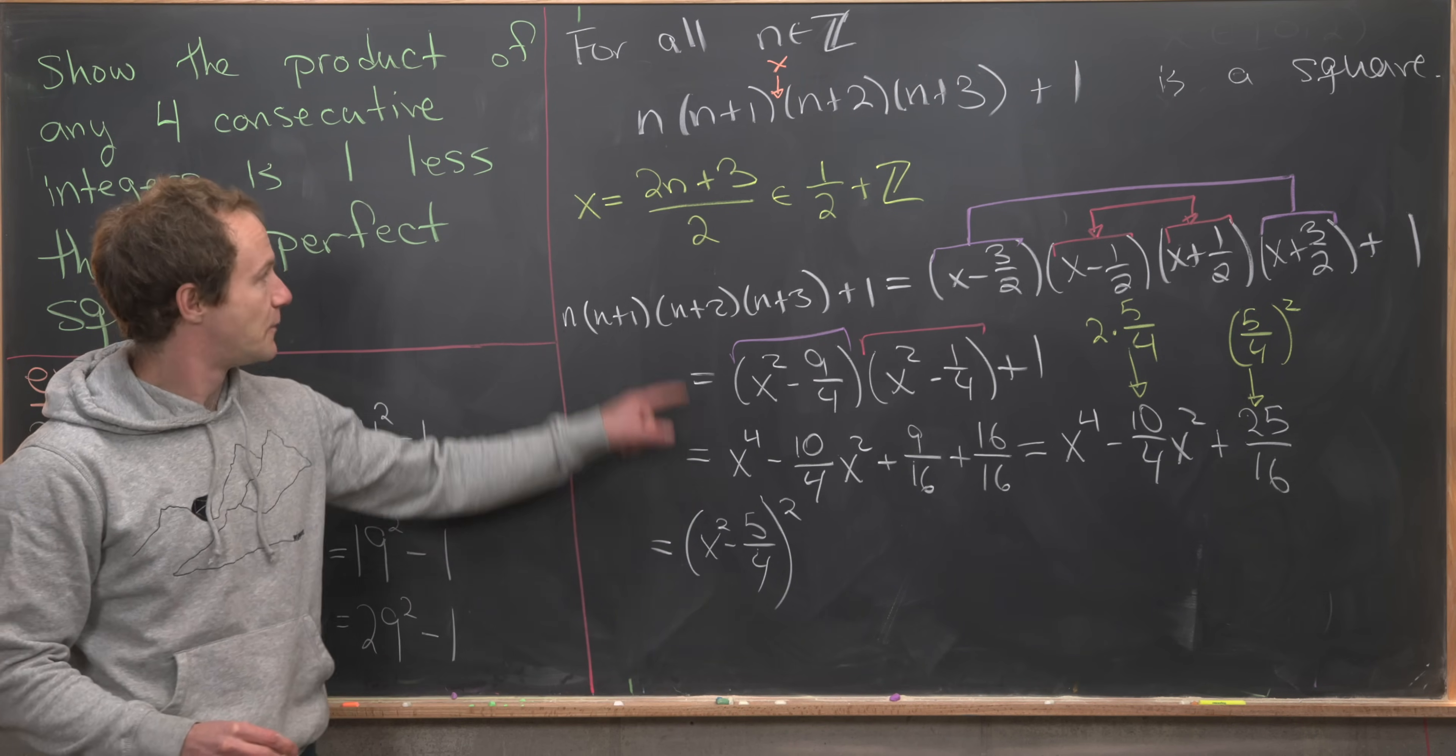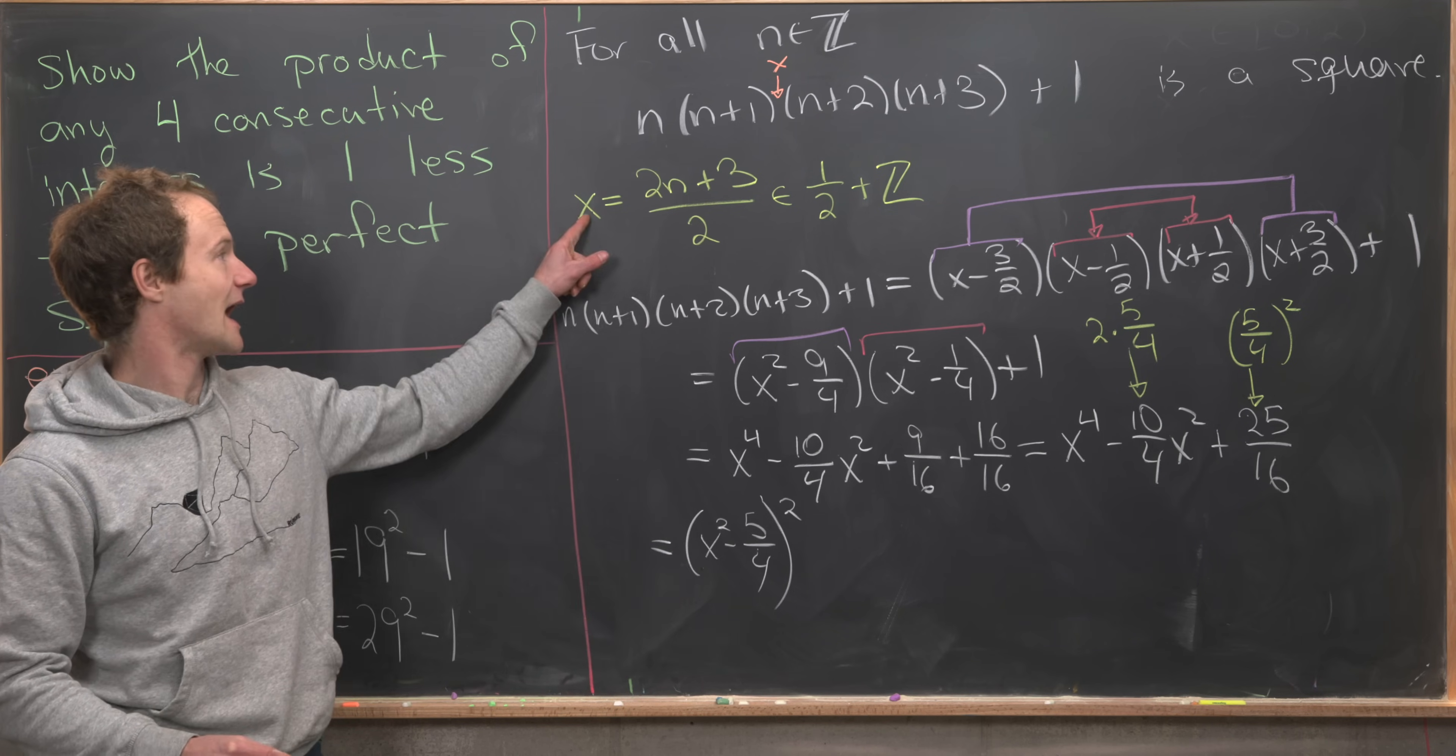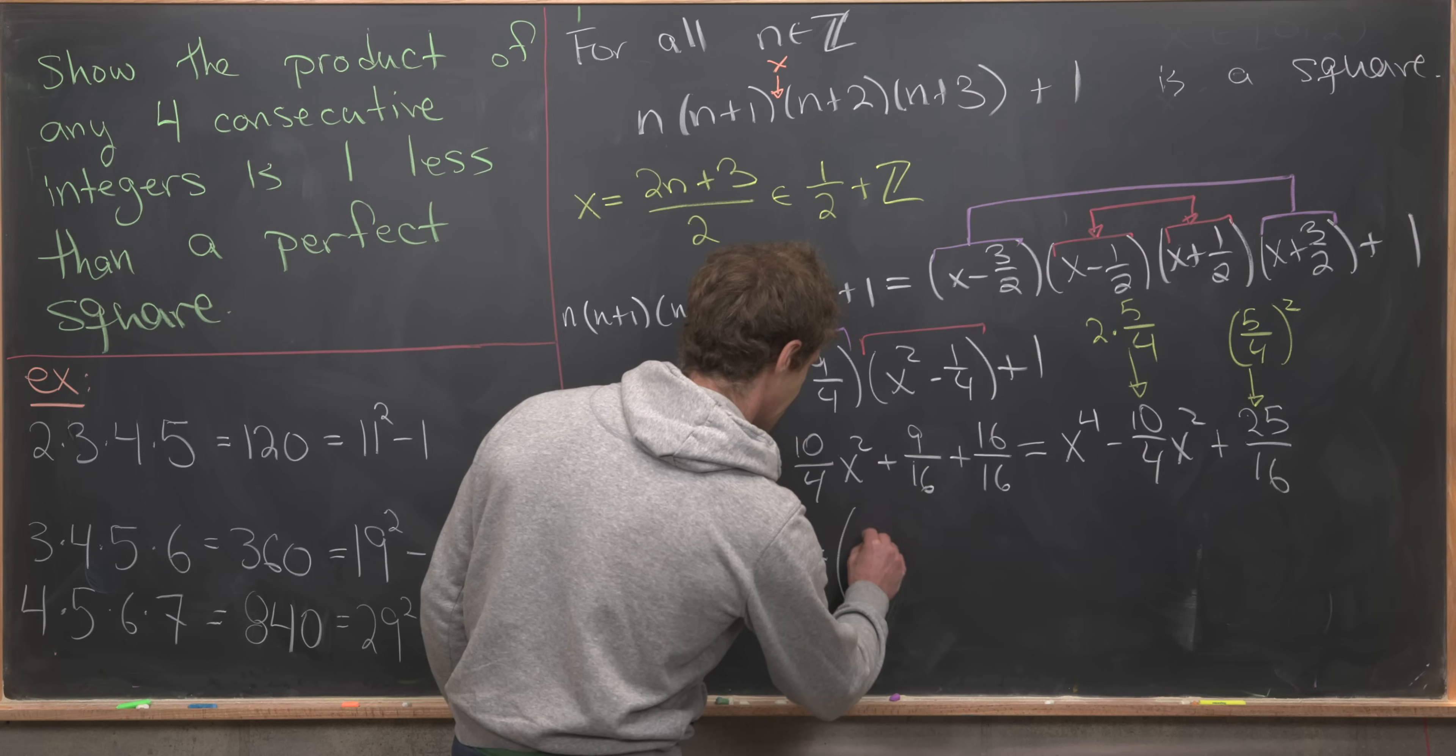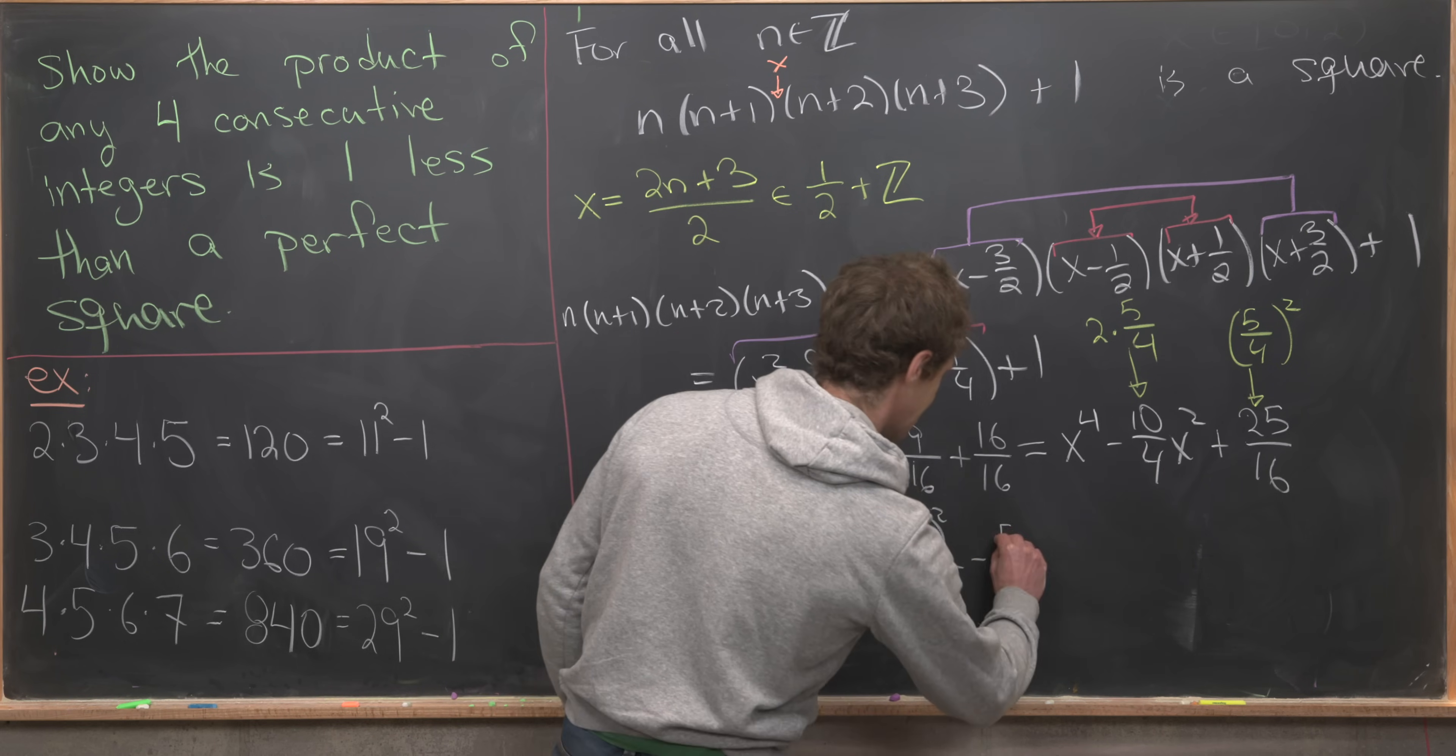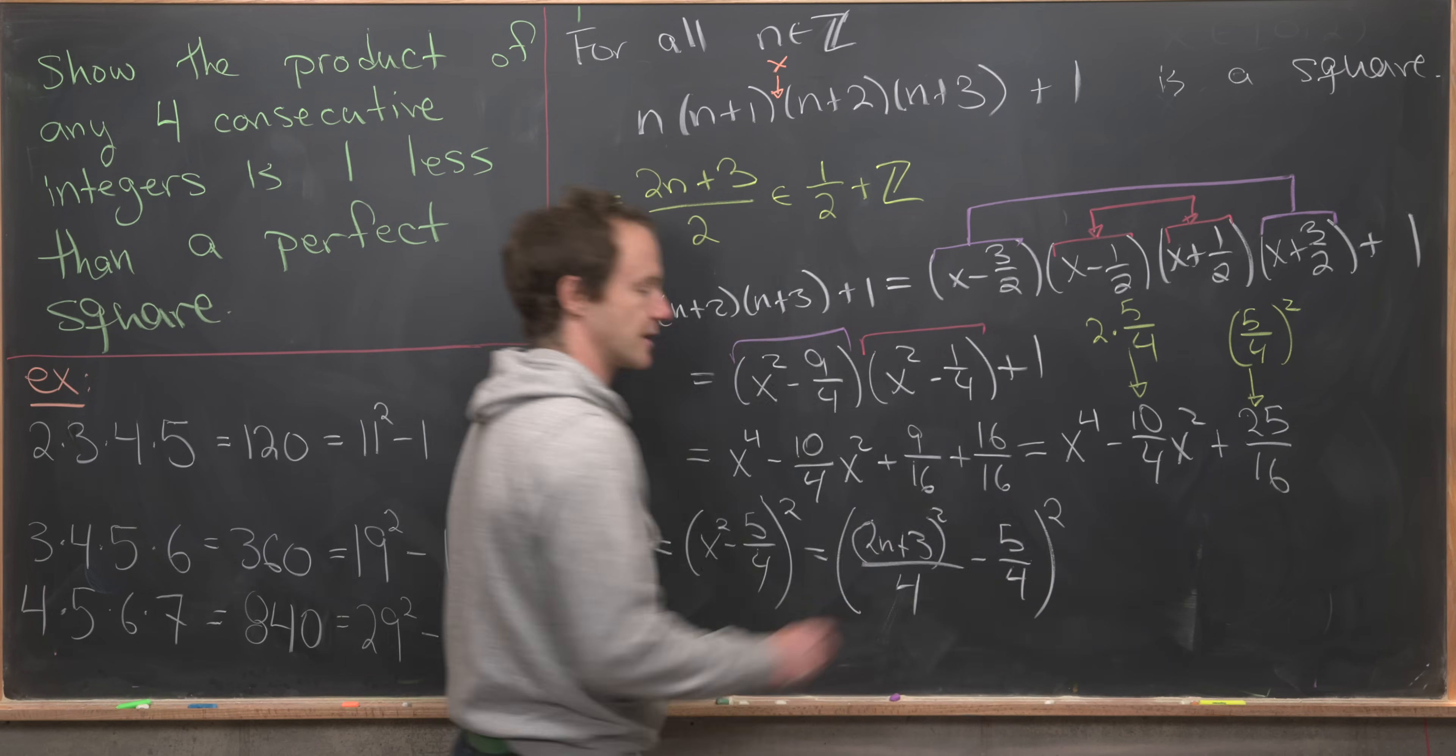But now we'll put our value of x back in here. So our x is (2n+3)/2. So that gives us [(2n+3)²/4 - 5/4]². And then all of this is being squared.